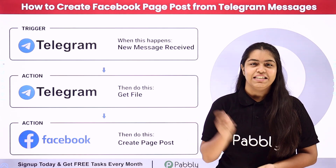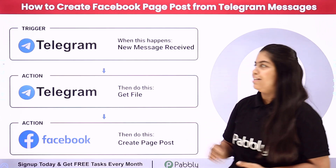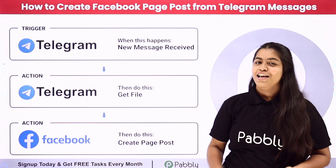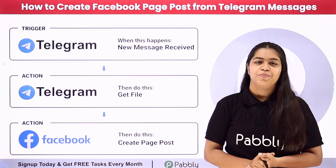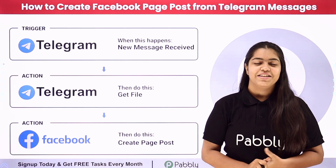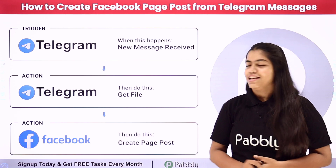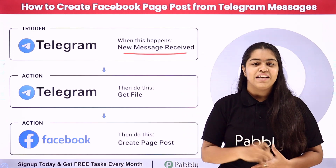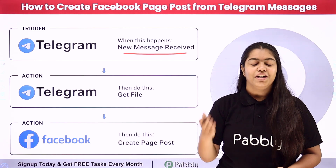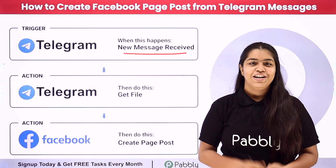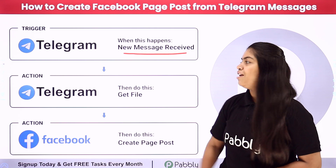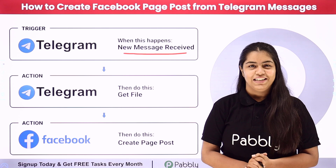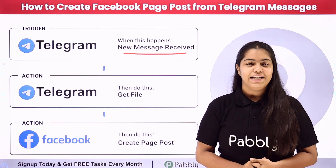Hello everyone, welcome back to Publi. In this video we are going to understand how to create Facebook page posts from Telegram messages. If you are also using a Facebook page to promote your business, this video is definitely for you. Our objective is that as soon as we receive a new message in our Telegram account, automatically a new Facebook post should be created. To do this, we are going to use Publi Connect.